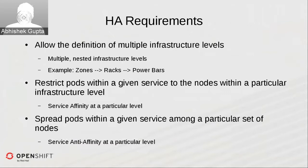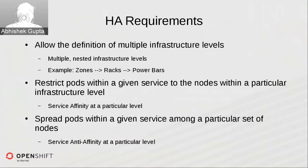Looking at HA requirements — taking a quick step back to 2.x, those who followed scheduling algorithms in OpenShift 2.x will know we have a similar concept with regions and zones. We essentially force you to categorize nodes within certain regions and zones. While those functionalities are helpful in achieving a good spread and HA, in OpenShift 3.x we aim to be more flexible.